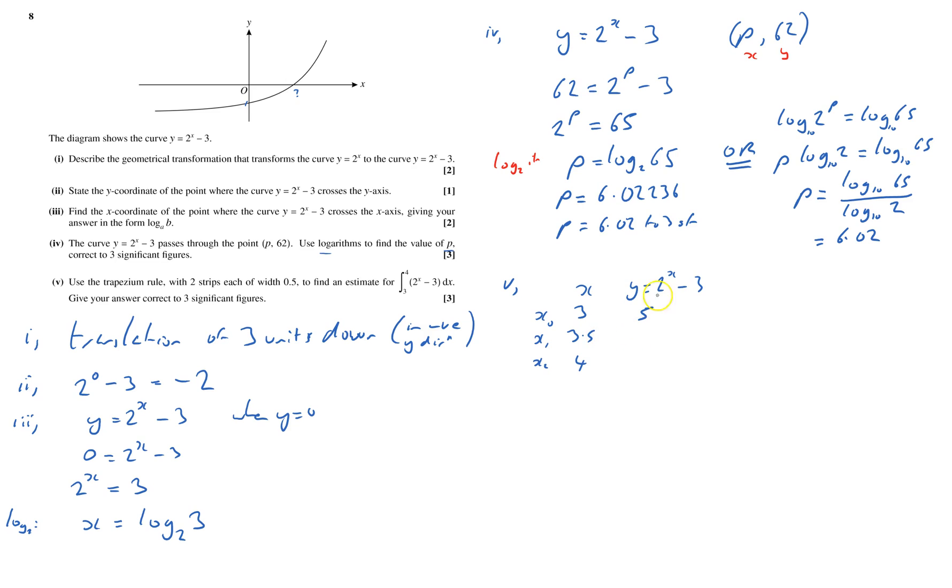4. 2 strips. And y equals 2 to the power of x take away 3. So 2 cubed is 8, take away 3 is 5. That would be 2 to the power of 3.5, I don't know that, take away 3. So that's 8.3137, I'll keep that in my calculator. And 2 to the power of 4 is 16, take away 3 is 13. So I know the area. It doesn't equal, it approximately equals 0.5 times h. That's the width. So it's 0.5. Curly brackets. And the first and the last one added together, so 5 plus 13, plus 2 lots of all the middle ones. And there's only one middle one, so that's 8.3137.